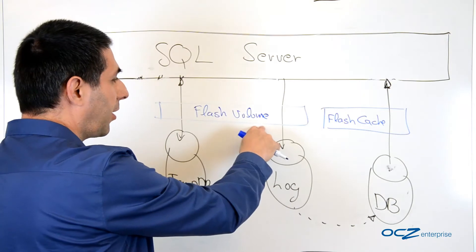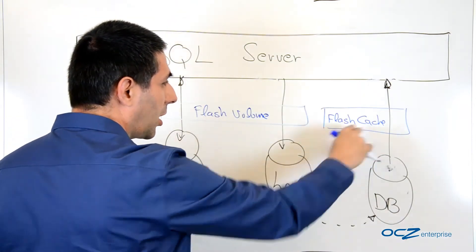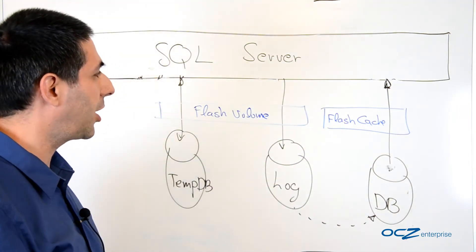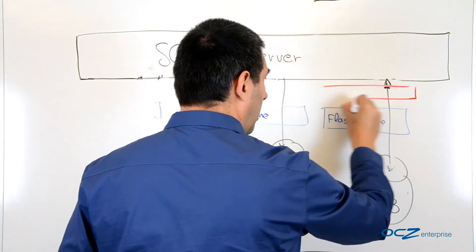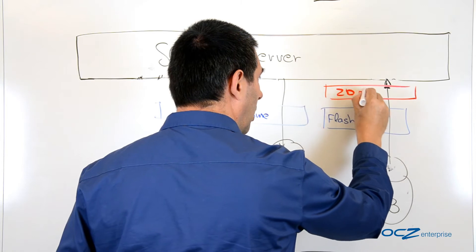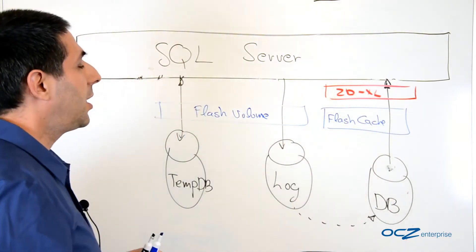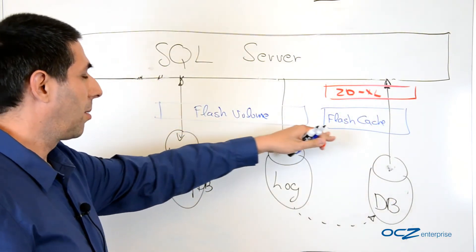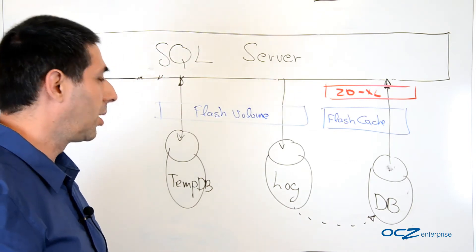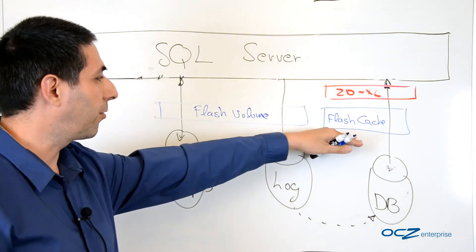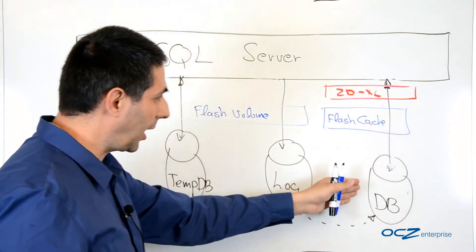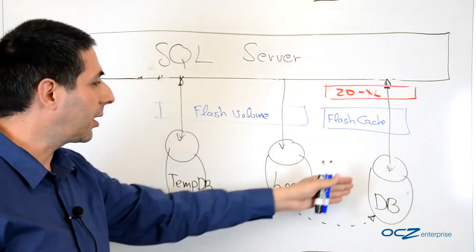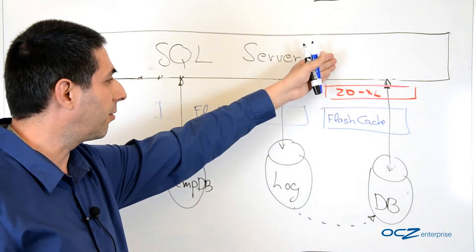The first partition is the flash volume. The second partition is used by the ZDXL as a flash cache. So, the added software here is in charge of both partitioning the volume to two parts—one for the flash cache, one for the flash volume—and caching all this database data from the database toward the SQL server.